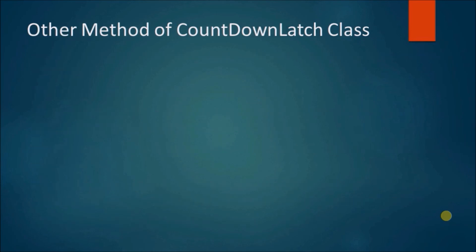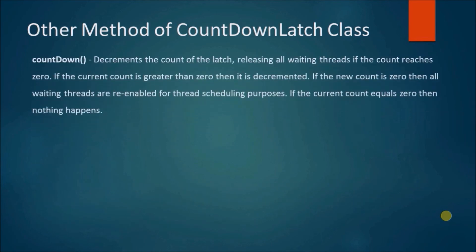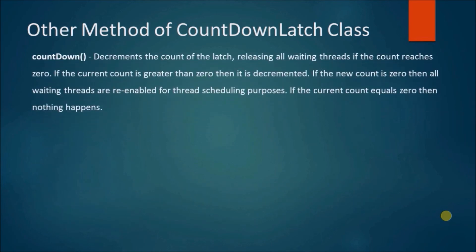Here are other methods of the countdown latch class. The countdown method decrements the count of the latch, releasing all waiting threads if the count reaches zero. If the current count is greater than zero then it is decremented. If the new count is zero then all waiting threads are re-enabled for thread scheduling purposes. If the current count equals zero then nothing happens.